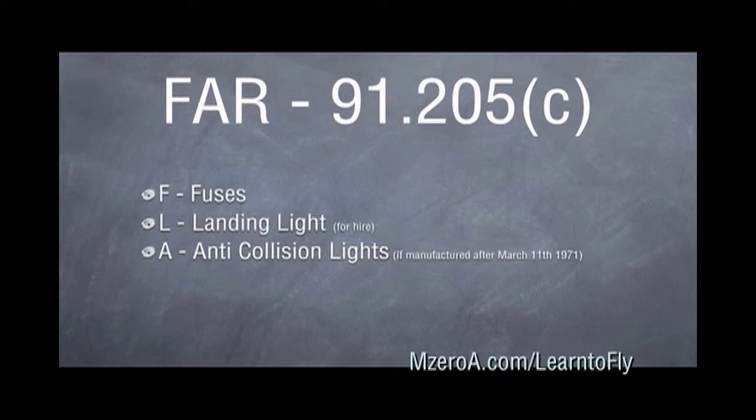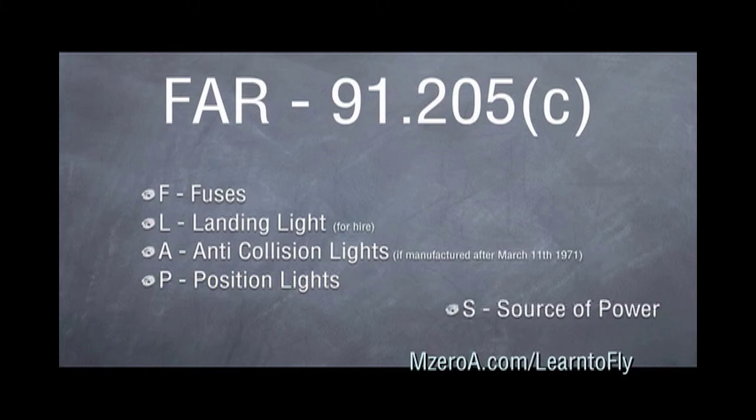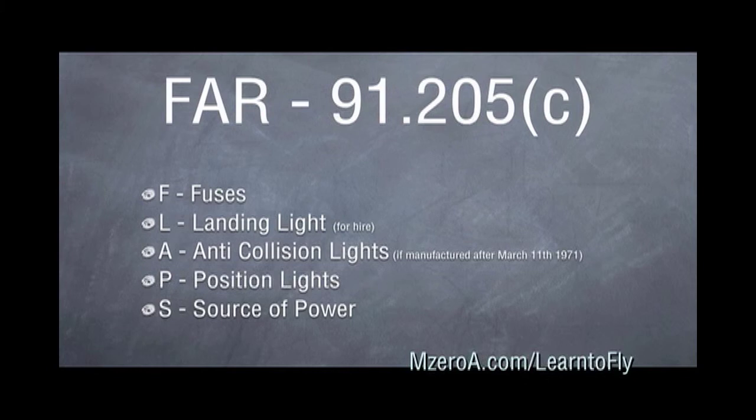A, notice this comes up twice, anti-collision lights. This time, it's manufactured after March 11th, 1971. P is for our position lights. And lastly, our S is for a source of power.